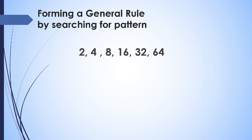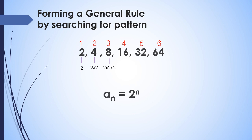For the sequence 2, 4, 8, 16, 32, 64 with positions 1 through 6, observe that: the first term is 2, the second is 2 times 2, the third is 2 times 2 times 2, and so on. We're multiplying 2 by itself a number of times equal to the position n. Since position is denoted by n, the general rule is a sub n equals 2 raised to n.